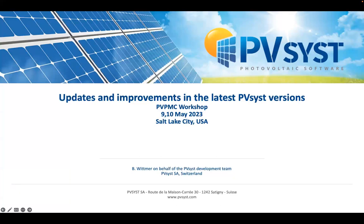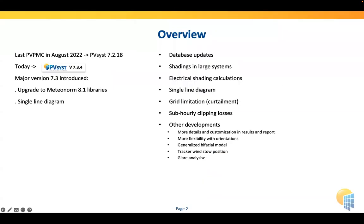Hello everybody. I'll give you a brief overview on a few topics we are working on at PVSYST — things we've implemented in current versions, things we are planning to implement soon, and some work we are doing on the long term. Last time I presented here was August last year, at PVSYST 7.2.18. Today we are at PVSYST 7.3.4 — one major version further. Version 7.3 introduced an upgrade to the Meteonorm 8.1 libraries and the single line diagram. I'll cover things done between 7.2.18 and the current version, and what we plan for 7.4 and version 8.